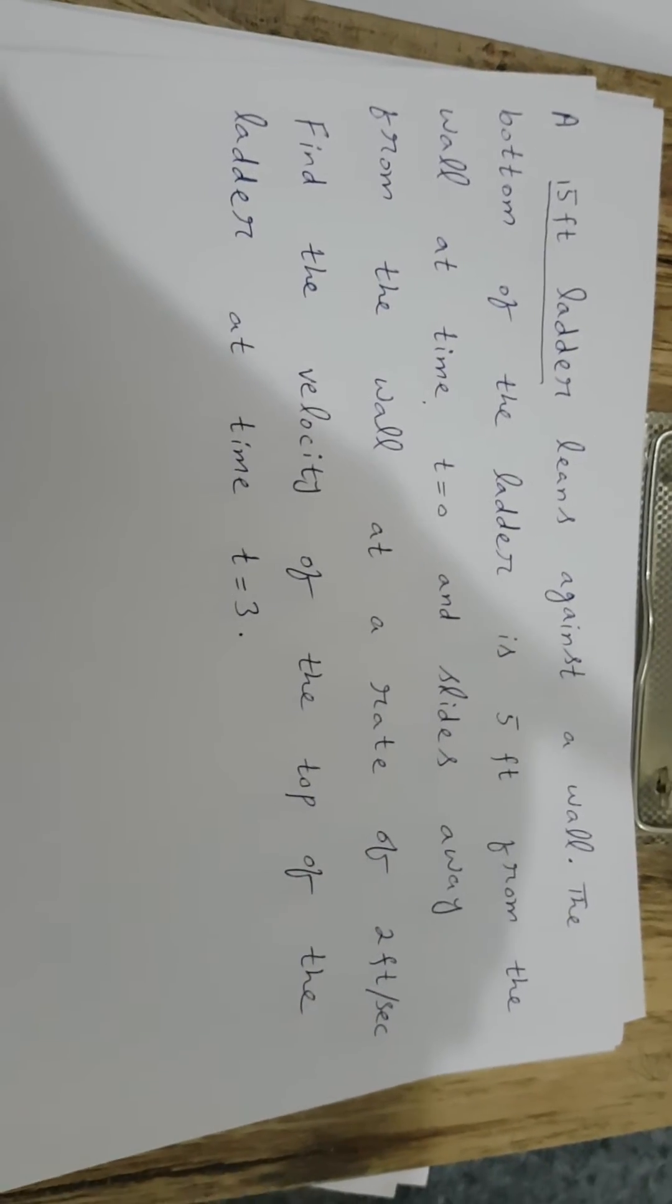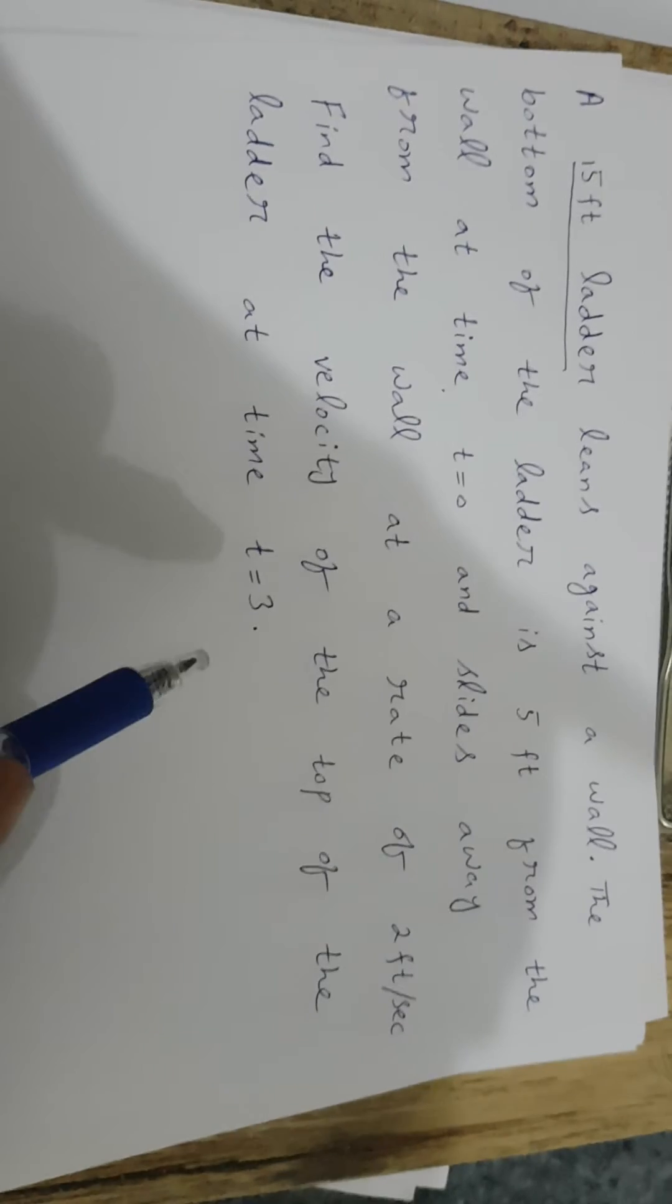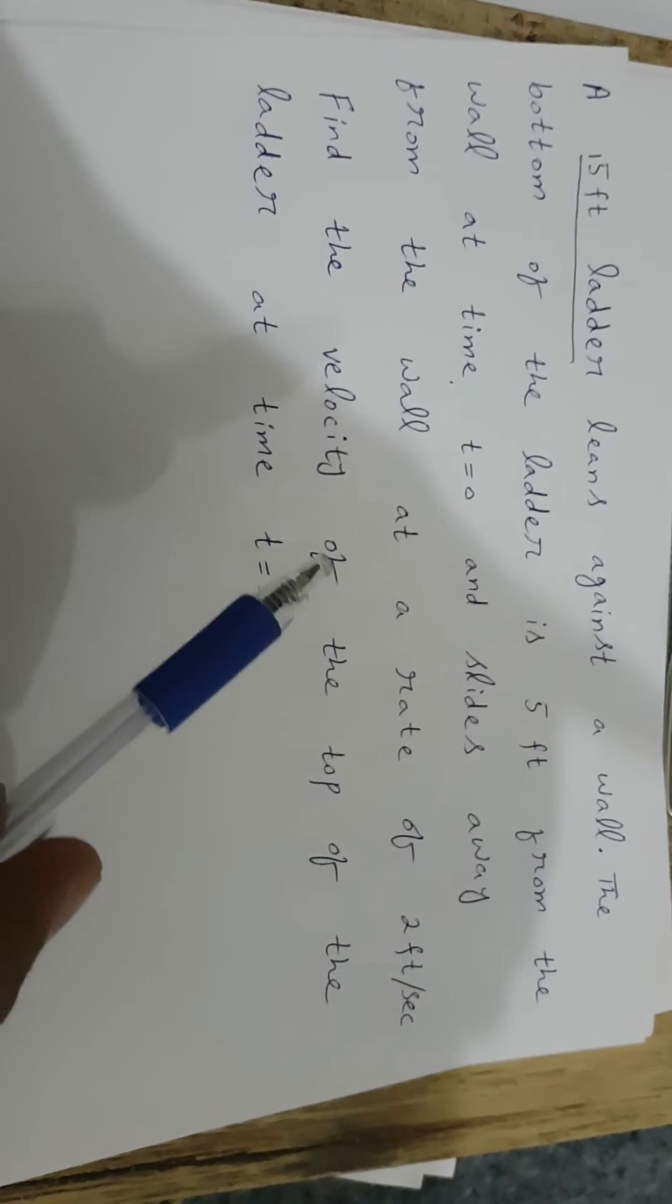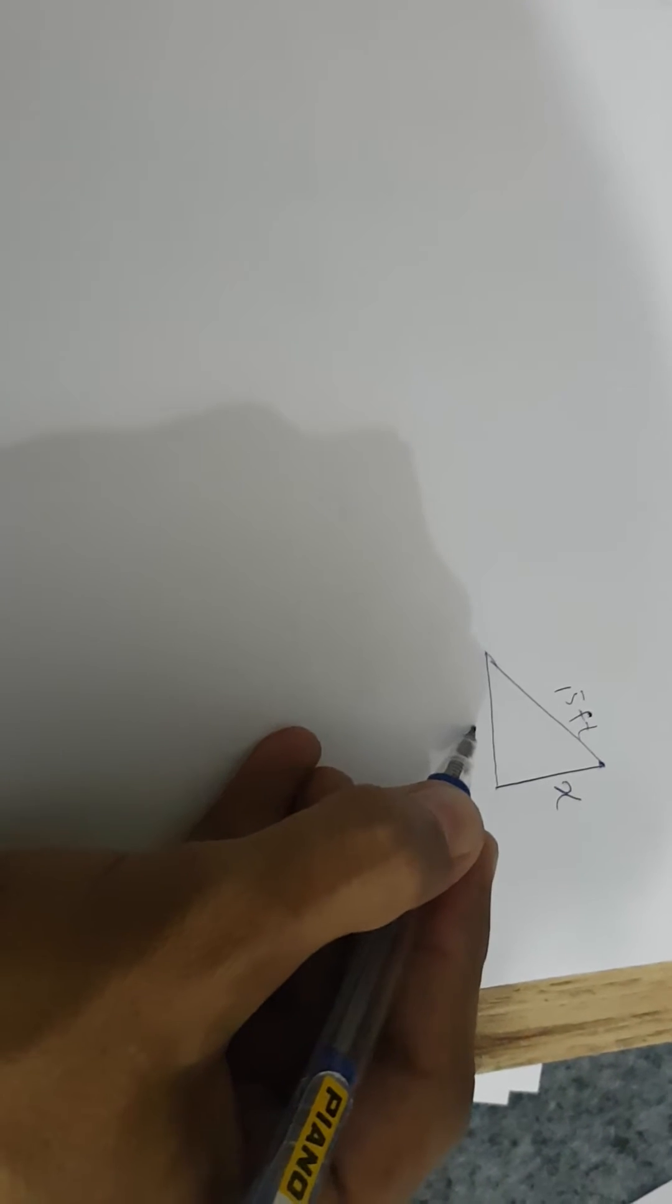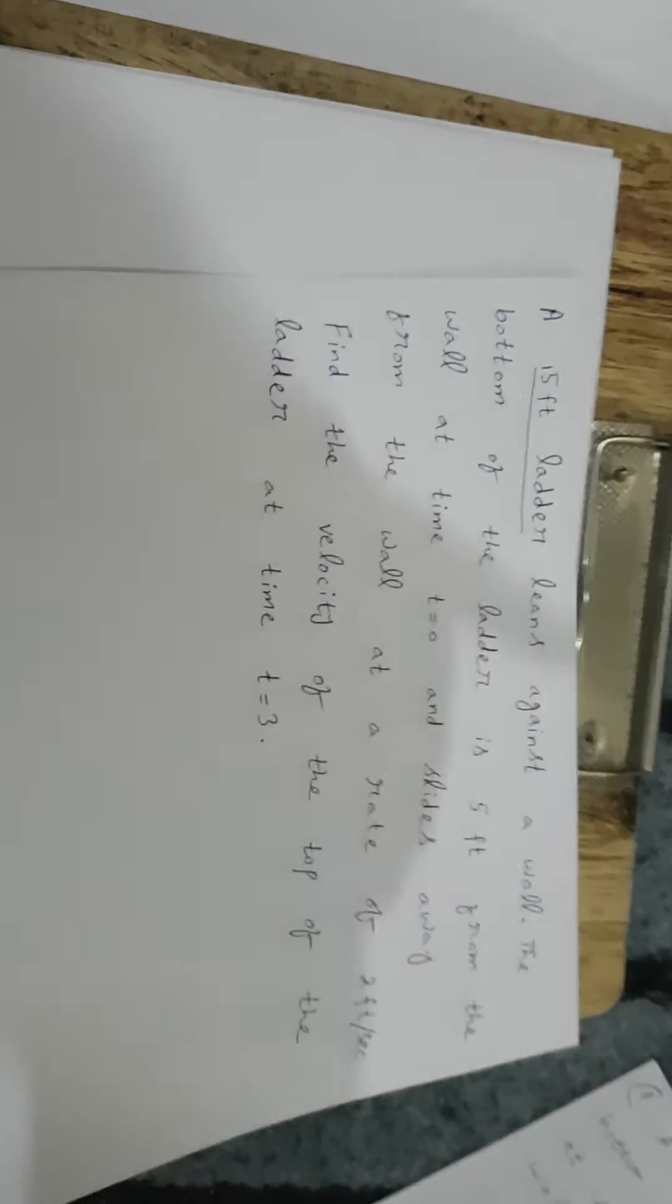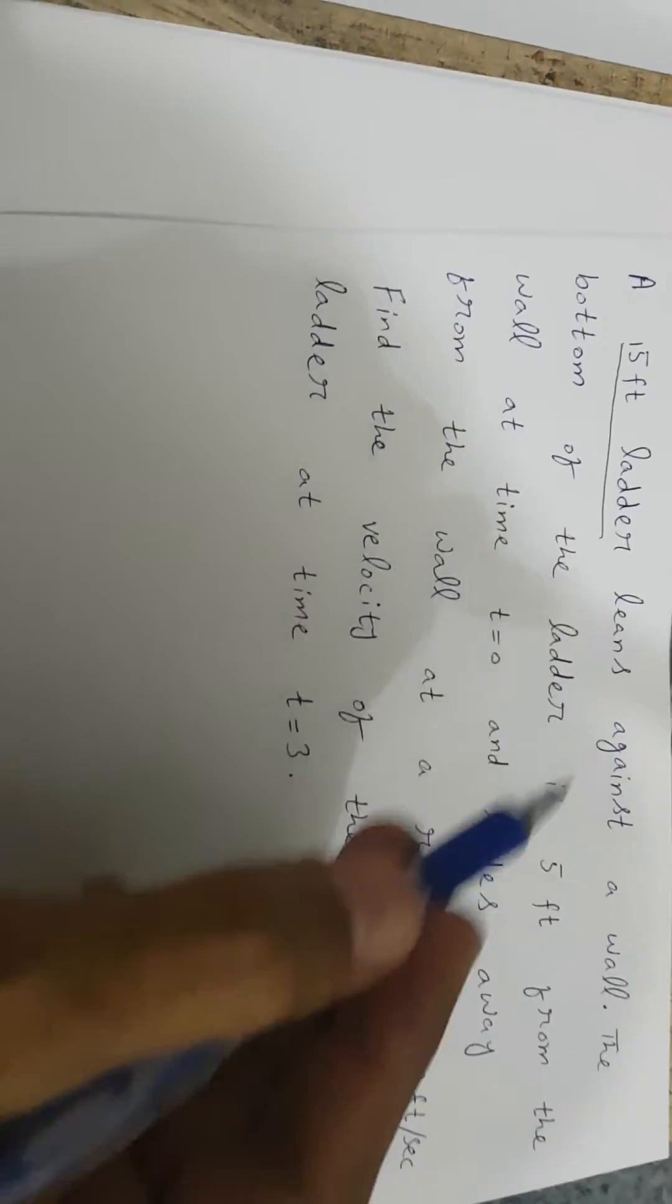First, we should draw a picture and identify what we are given and what we have to find. Let's suppose this is the wall and this is the ladder leaning against the wall. The length of the ladder is 15 feet. Let's suppose this is X, the wall length, and this is Y, the base.